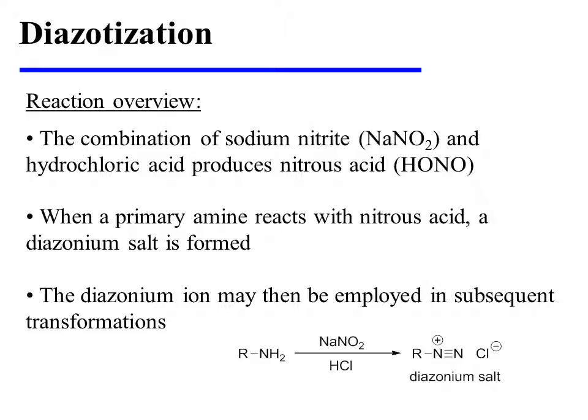The combination of sodium nitrite and hydrochloric acid produces nitrous acid. When a primary amine reacts with nitrous acid, a diazonium salt is formed. The diazonium ion may then be employed in subsequent transformations.